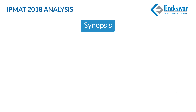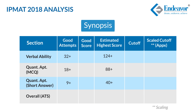Now let us review the synopsis of the entire paper. The three sections are Verbal Ability, QA MCQ based questions, and QA short answer based questions. We are anticipating good scores of 96 in Verbal Ability, 52 in QA MCQ, and 20 plus in QA short answer. The cutoff estimates for each section are: 80 for Verbal Ability, 36 for QA MCQ, and 12 for QA short answer. Converting to scale scores and applying the respective weightages — 30% for Verbal Ability and 35% each for the remaining two sections — we arrive at an estimated cutoff scale score of 43 plus for IPMAT 2018.